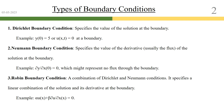In the Robin boundary condition, we have a mix of both. For example, the boundary condition is alpha * u(x) + beta * derivative of u = 0. Here, alpha * u(x) is the Dirichlet contribution and the derivative term is the Neumann contribution, and the mix of these two is your Robin boundary condition.